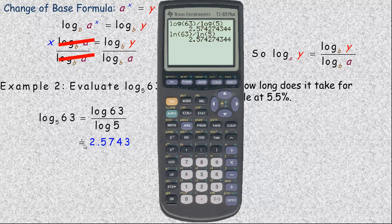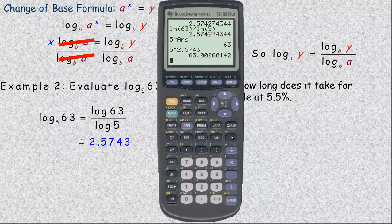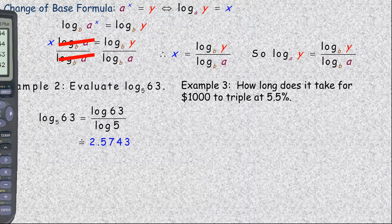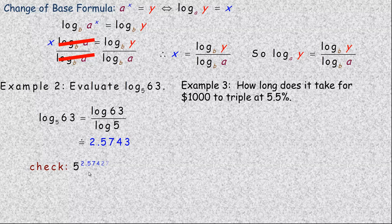As a check: what that logarithm means is if you raise 5 to that power, you should get 63. So we go 5 to the power of 2.5743, and we get very close to 63 — it's not exactly 63 because of rounding. That's how you would check: evaluate 5 to that power, and you should get 63.